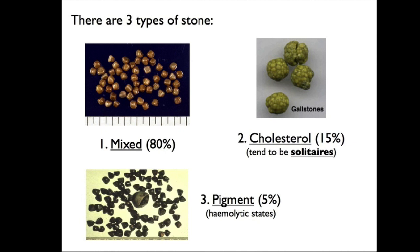There are three types of stones. The most common is the mixed stone, accounting for about 80%. The next most common is the cholesterol gallstone, accounting for about 15% — these tend to be large stones, sometimes called solitaires, and appear faceted when cut through. Pigment gallstones account for about 5% and are associated with hemolytic states.